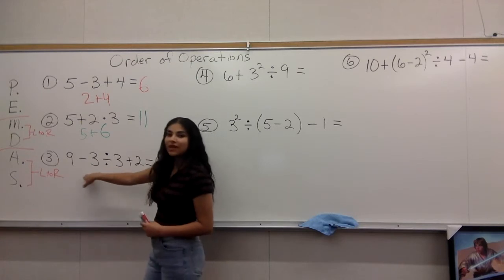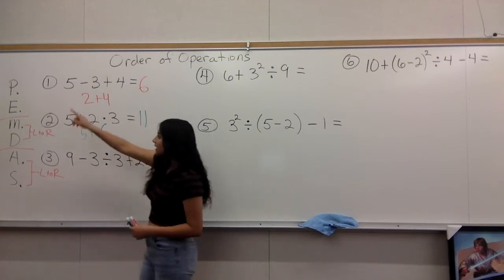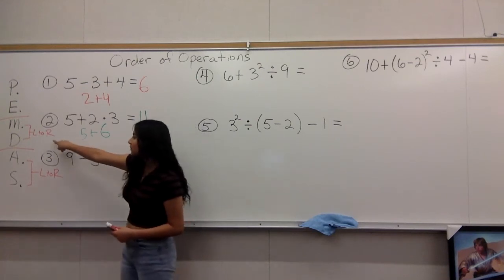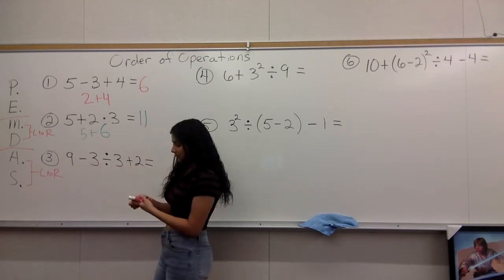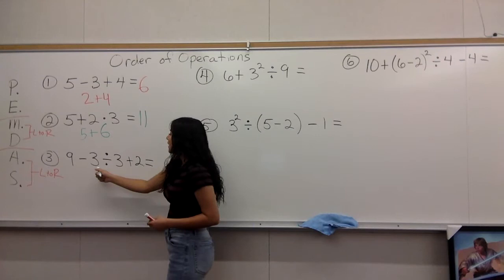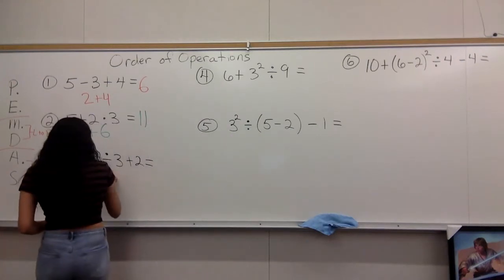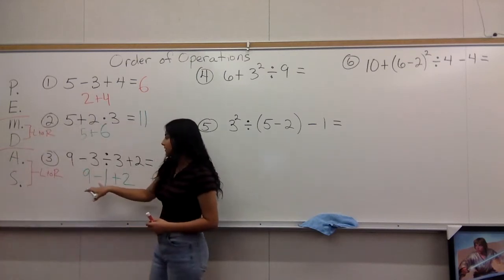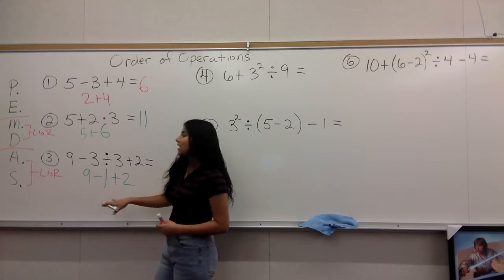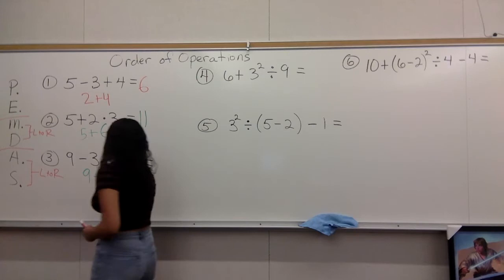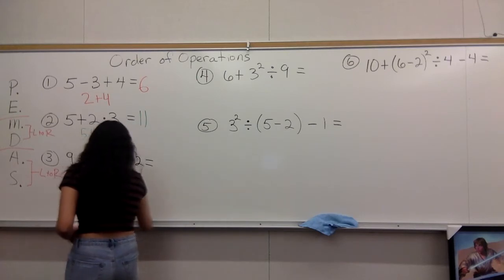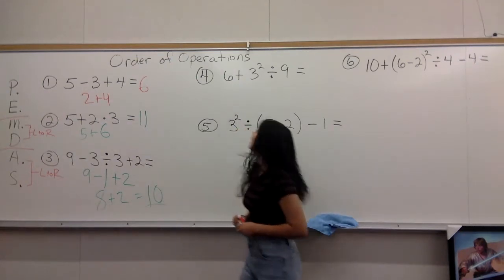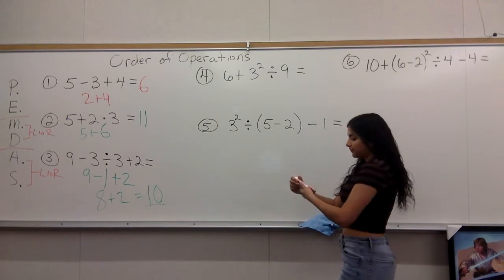On number three, going down the list, we only have division, subtraction, and addition. Division goes first because it's always more important than subtraction and addition. So we take care of the division: three divided by three is one. We rewrite the problem. Now we only have subtraction and addition, so we go left to right: nine minus one is eight, plus two is ten. Ten is your answer for number three.